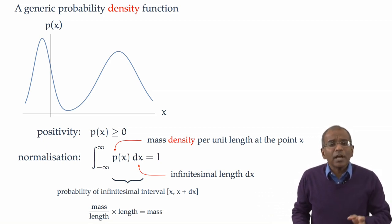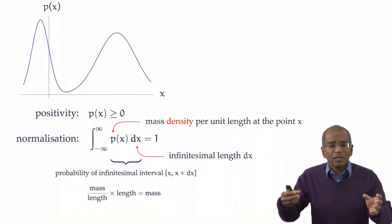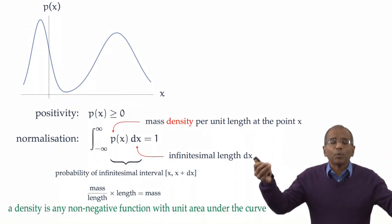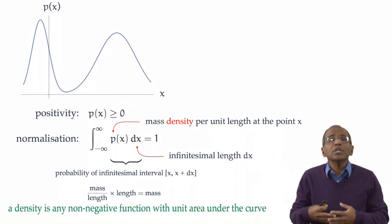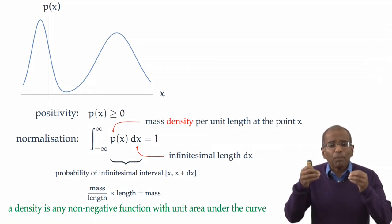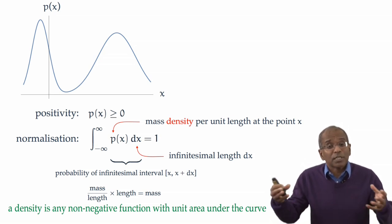Any generic function, p of x, which is non-negative everywhere and has got unit area under the curve, constitutes a bona fide probability density for some chance experiment.